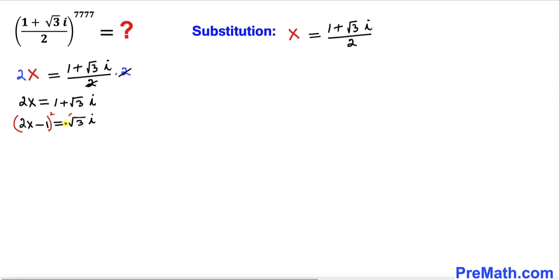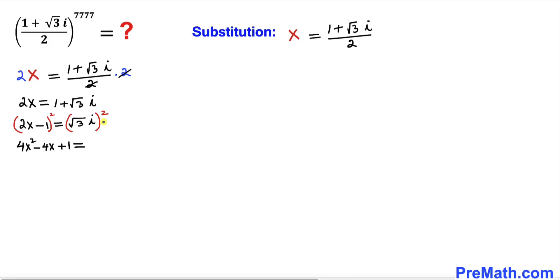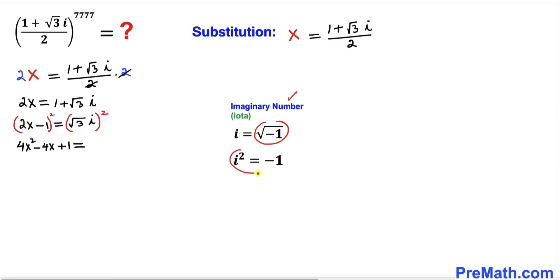Now let's square both sides. On the left-hand side we apply the famous identity (a - b)² to get 4x² - 4x + 1. On the right-hand side, recall that i = √(-1), so i² = -1. The square root and the square undo each other, giving us 3 × (-1) = -3.